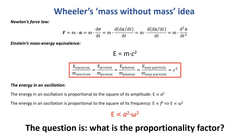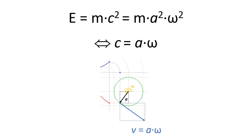The question we now need to answer is: what's the proportionality factor? Because if we can find that proportionality factor, we have an equation for the energy in an oscillation. I'm going to write that proportionality factor as m — the same symbol used for the mass of some object. I'm going to boldly assume that the proportionality factor is the mass. I've got good reasons for that, which I'll explain later.